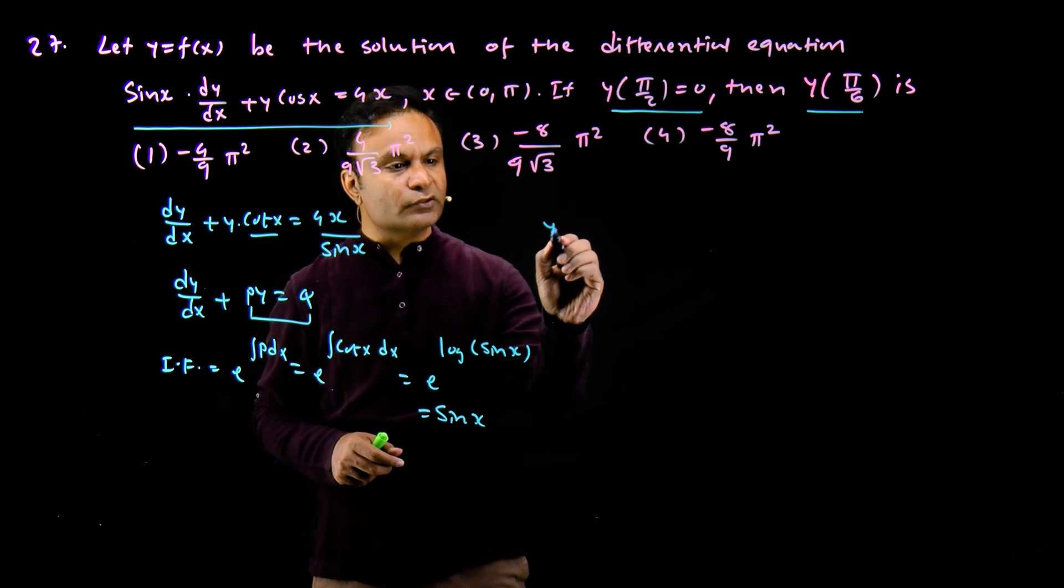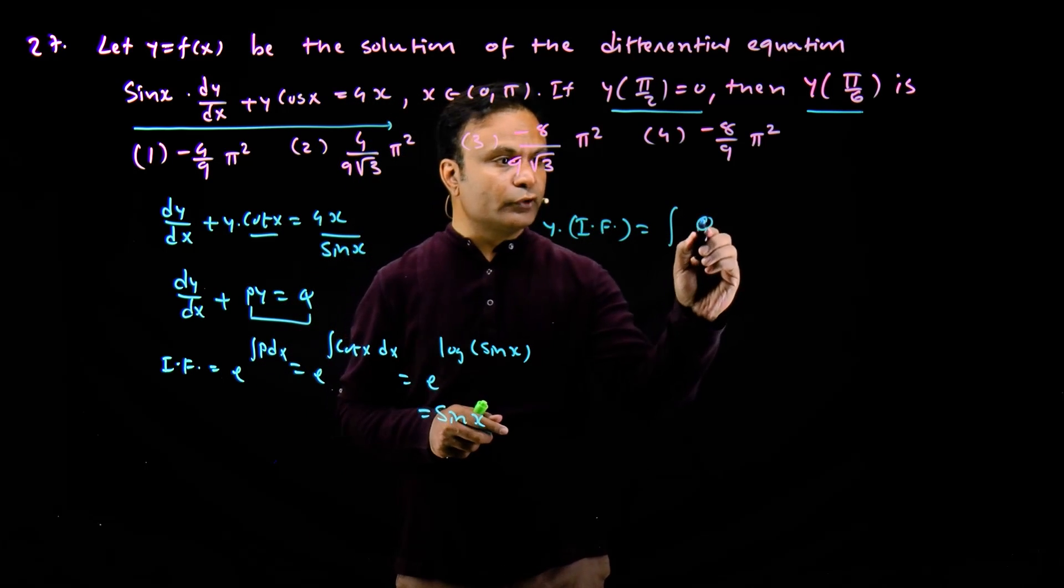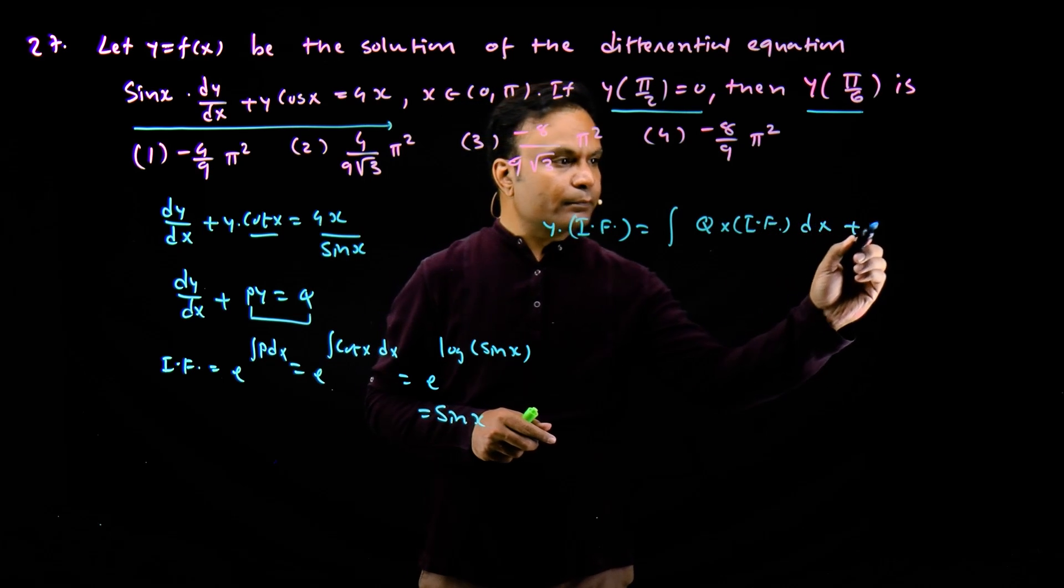What is the solution of this? The solution is y multiply by integrating factor is equal to integration of q multiply by integrating factor plus c.